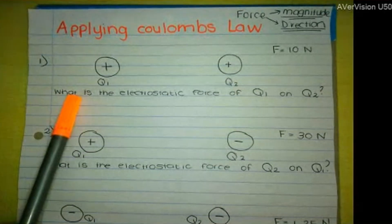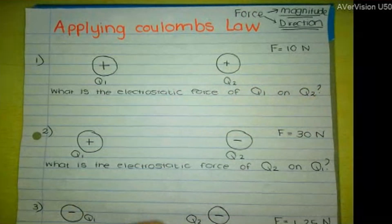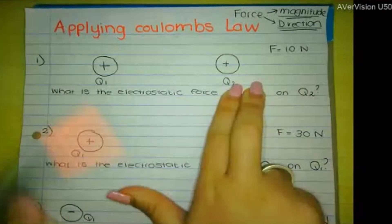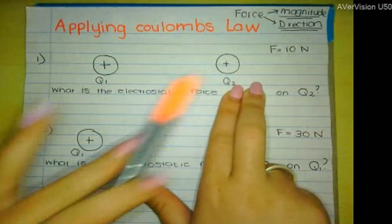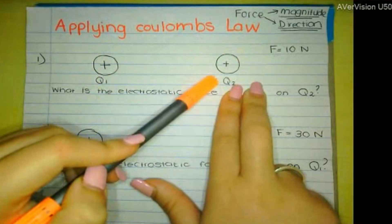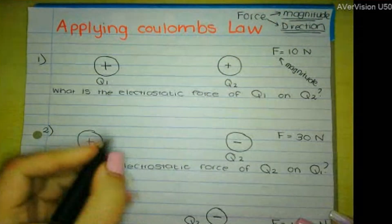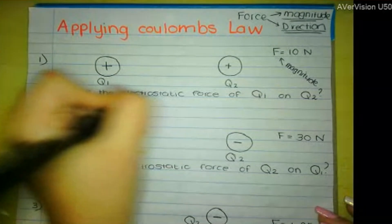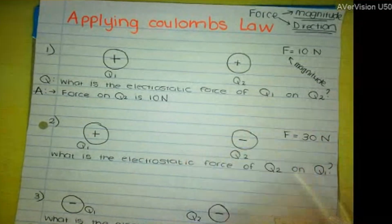For number one, the question asks: what is the electrostatic force of Q1 on Q2? Basically, I'm asking what is the electrostatic force on Q2 — the question can be asked either way. You look at what's going on in the picture: Q2 is there, the only other charge is Q1, so Q1 is going to have an impact on Q2. I gave you the magnitude of the force, but you can't just say the force on Q2 is 10 newtons — force is a vector, you need magnitude and direction.